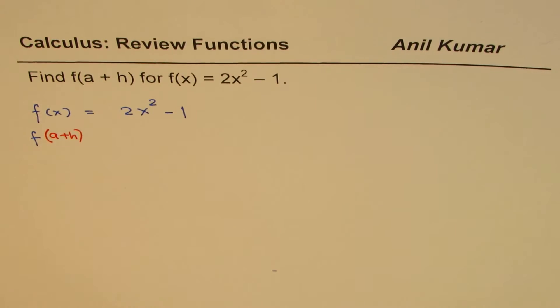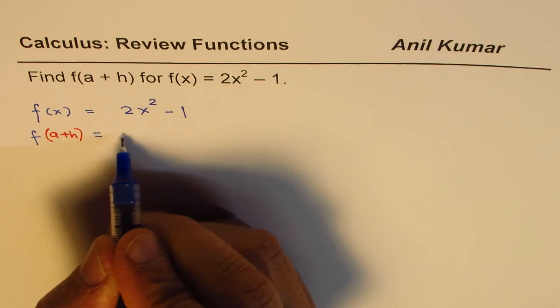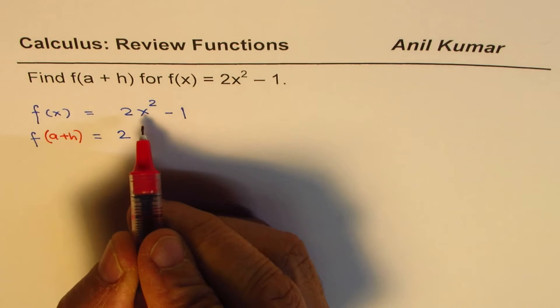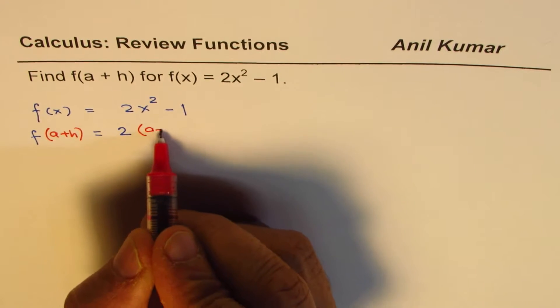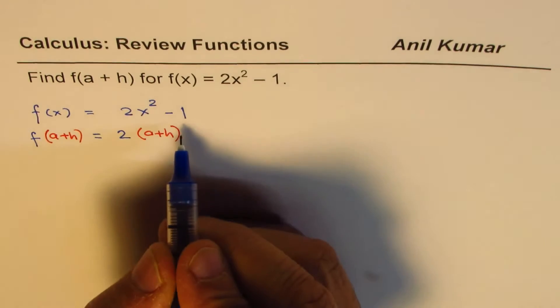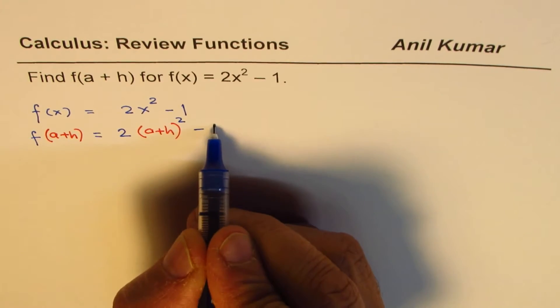In that case, what we're trying to do here is, in this expression 2x² - 1, we'll replace x with a+h. So that is what we are going to do and then write the function as such.